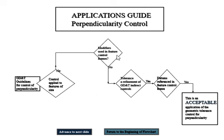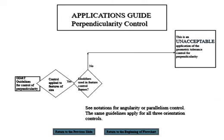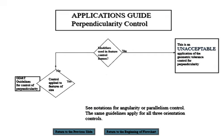I think the first part ends around here. So let's go to the next one. I had to stop it. So we look at the feature of size, and if you look at the modifier and you don't have it, then it's not acceptable.